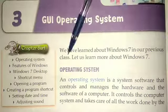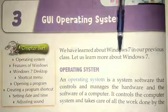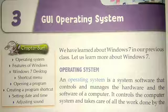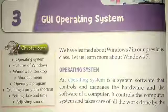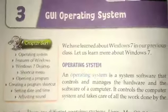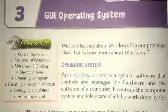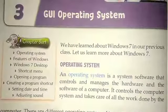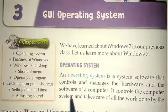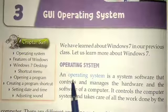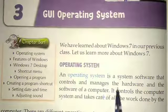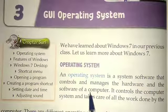We have learned about Windows 7 in our previous class. Let us learn more about Windows 7 — we will especially focus on this chapter and see the features of Windows 7. An operating system is a system software that controls and manages the hardware and the software of a computer.